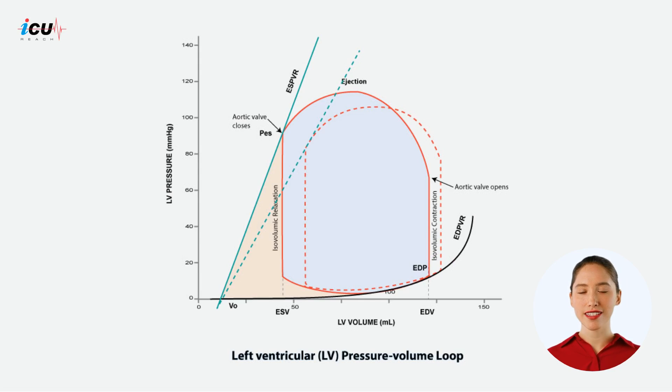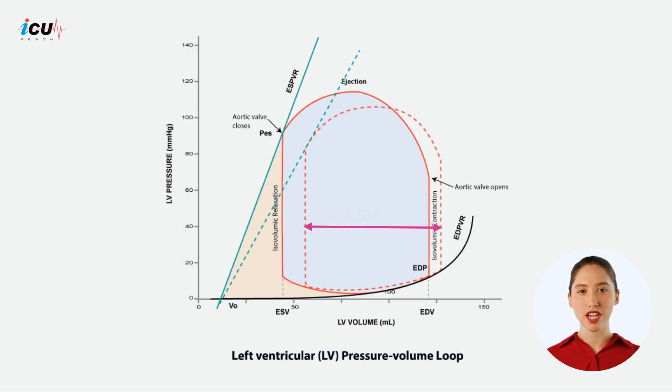Finally, because end systolic volume increases, while end diastolic volume remains the same or slightly decreases, stroke volume decreases.